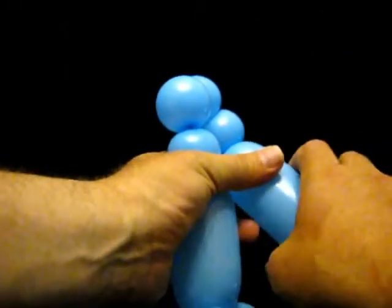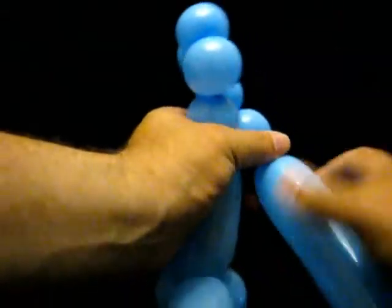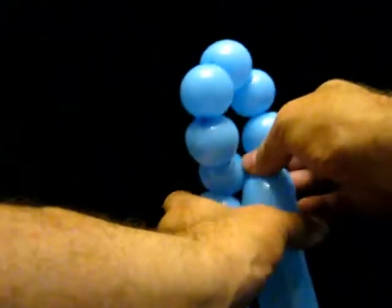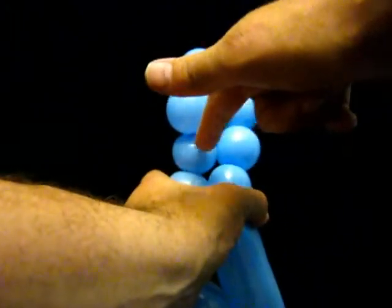If I don't do that, they will come undone later. Five, six. We'll twist these two bubbles. Of that chain of six, we'll twist the first and the sixth bubble together.